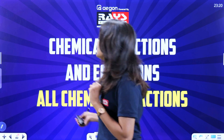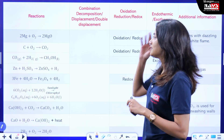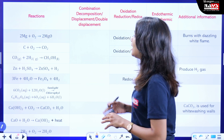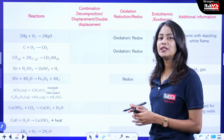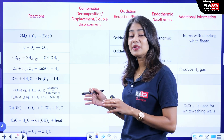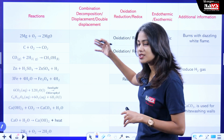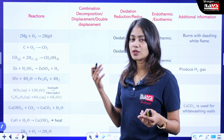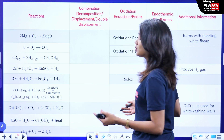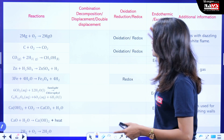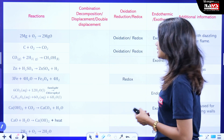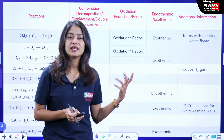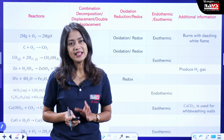Here you can see a table and this table contains the chemical reactions in the first chapter. By observing this table, you can understand whether the chemical reaction belongs to combination reaction, decomposition reaction, displacement reaction, or double displacement reaction. You can also identify whether the reaction is oxidation or reduction, whether it is exothermic or endothermic, and some important additional information about these chemical reactions.